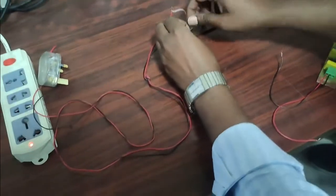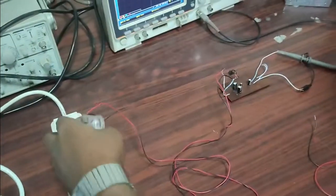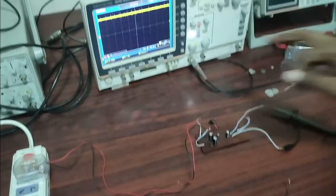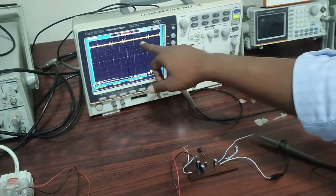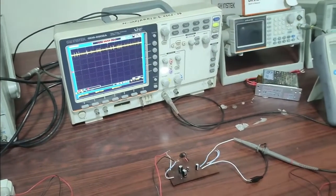Let's first observe the output of the buck converter without using this filter. We need to power up the circuit. This is the output shown in the oscilloscope and we see lots of EMI noise is present in the output.